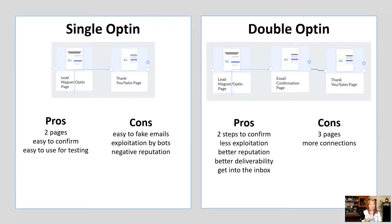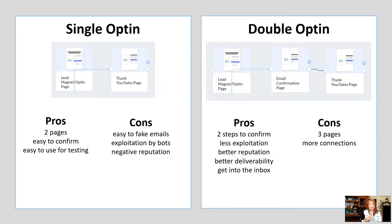Here are some pros to this kind of subscriber list. The first one is two-step confirmation — they have to complete both steps to be considered confirmed in your email list. If they do not complete both steps, your system is not going to send out emails to them. There's also a lot less exploitation by bots, because bots have a much harder time completing both the form and the email confirmation. You'll also get a better reputation for your email list because there's better deliverability, and you'll get into the inbox a lot more easily rather than spam.